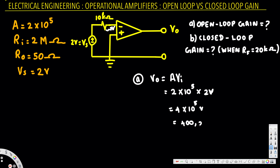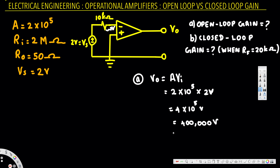That's a very large number, so this is not going to be the actual output. When we have such a large calculated output, the actual output voltage will be equal to V_cc — whatever the supply voltage is. That is the output voltage for open loop gain.